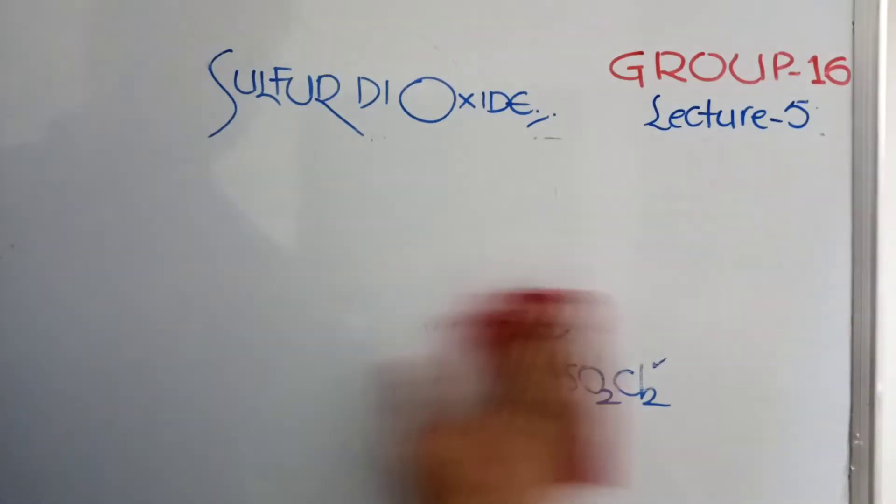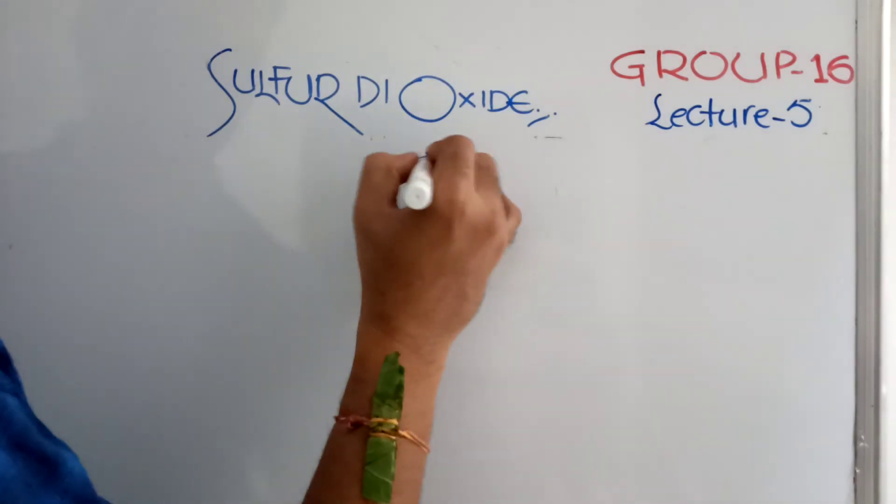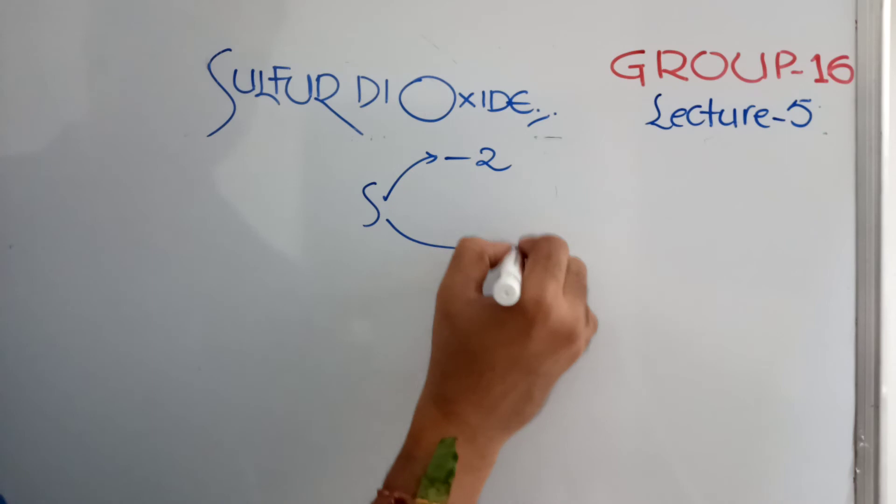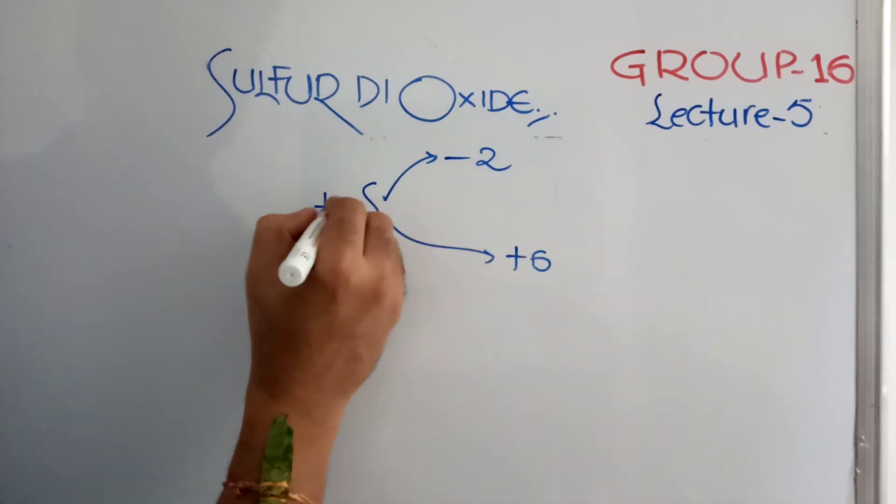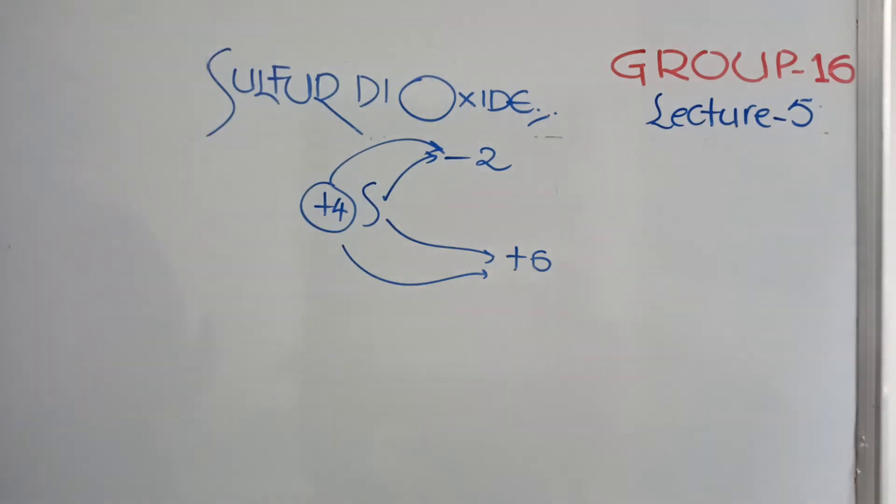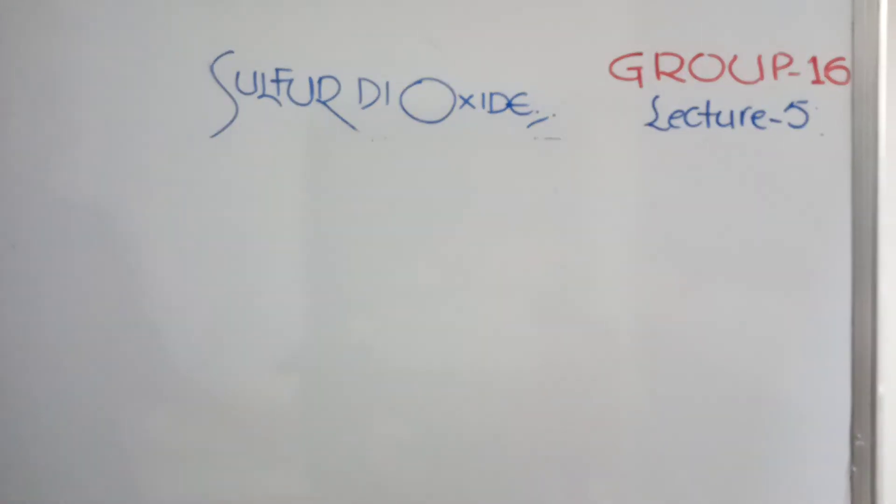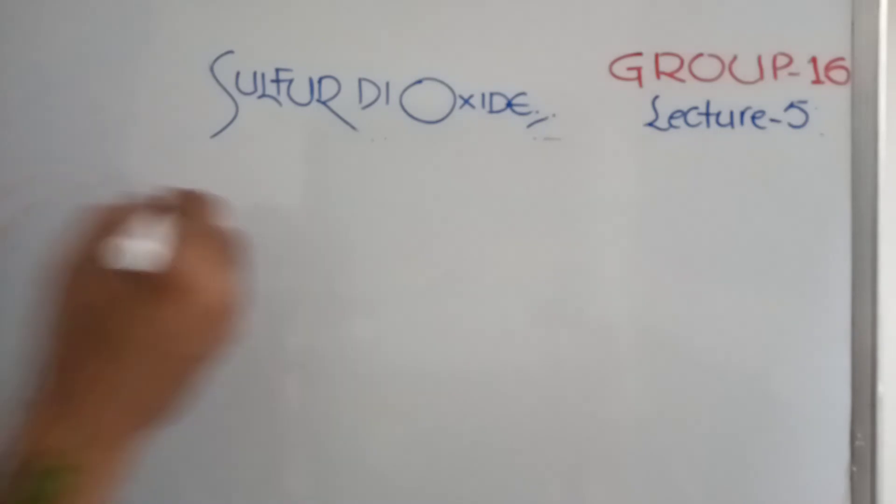As I told you, this is having an intermediate oxidation state plus 4. Sulfur can have a minimum state of minus 2, a maximum state of plus 6. When Sulfur is in plus 4, it can go this side or it can come this side. That means it can undergo oxidation, it can undergo reduction. When it undergoes oxidation, it is a reducing agent. When it undergoes reduction, it is an oxidizing agent. Both are possible here.